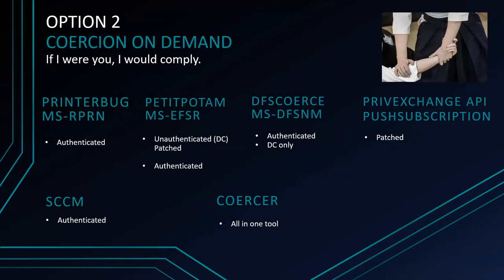The second option to coerce is what we call coercion on demand, because we can generate an immediate hash request from the host we're trying to compromise. Usually these methods use RPC calls. The first time this came to my attention was exploiting what we call the printer bug, an exploit by Lee Christensen. It basically asks a remote host whether it has something in its print spooler, and we receive a machine hash in return. About a year and a half ago, there was another big one by Lionel Gilles called PetitPotam, which changed everything — at the time it came out, you could coerce a domain controller without any authentication. So when you mix that with other techniques, it becomes very devastating.